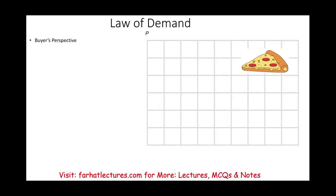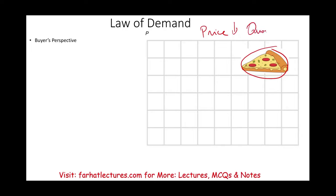To explain the law of demand, we're going to be looking from the buyer's perspective. Let me ask you this question: what happens if the price of something you like to buy — let's assume we're buying pizza — the price of pizza goes down? Everything else is equal. Well, most likely the quantity you like to consume goes up because the price is going down.